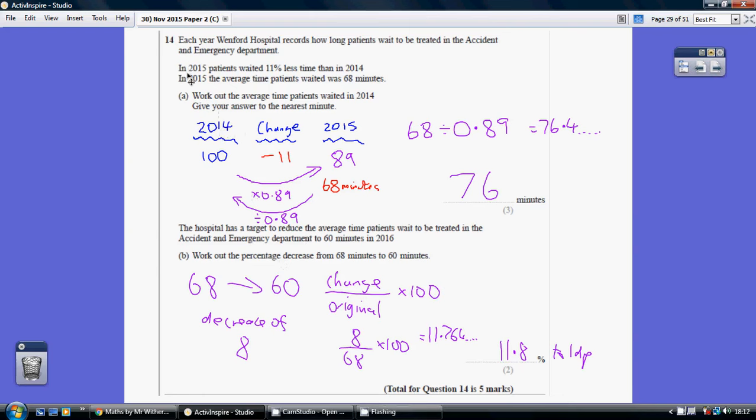So in 2015 patients waited 11% less time than in 2014. So let's set up a 2014 column, a 2015 column and a change column. And we're told in 2015 they waited 11% less.